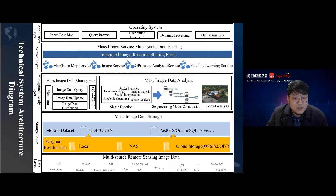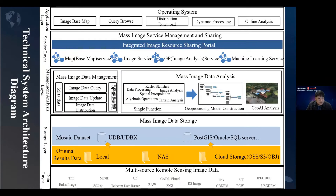In the whole process management, the original data will not exist directly in the spatial data engine, but in the form of mosaic data sites. Only the metadata of image data is stored in the spatial data engine for maintenance and update. This metadata is stored in the file spatial data engine — we call it UDB/UDBX — or the database spatial data engine, in the form of mosaic data sites. In the management analysis layer, functions such as query, update, distribution, geo-processing model, and GeoAI are provided.